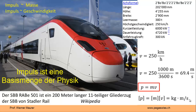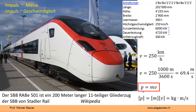Den Impuls kann man nicht definieren. Das hat man vor 100 Jahren noch so definiert. Den Impuls kann man einfach messen, wenn er drinsteckt, indem man sagt: Masse mal Geschwindigkeit ist der Impulsinhalt. Das ist eine Messvorschrift.